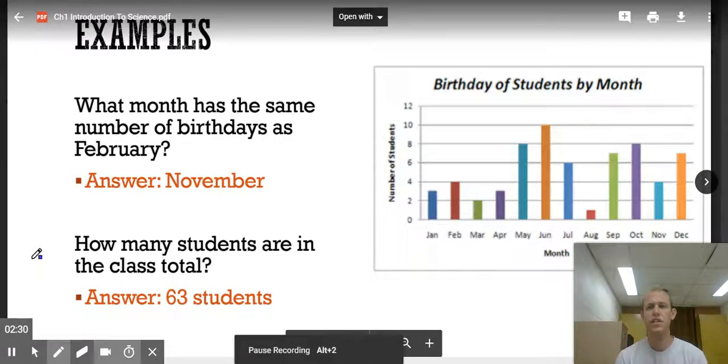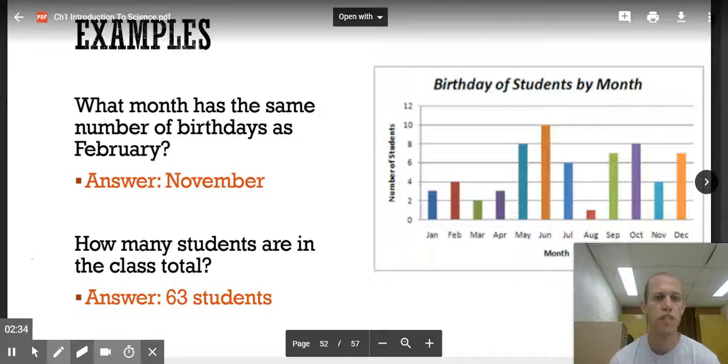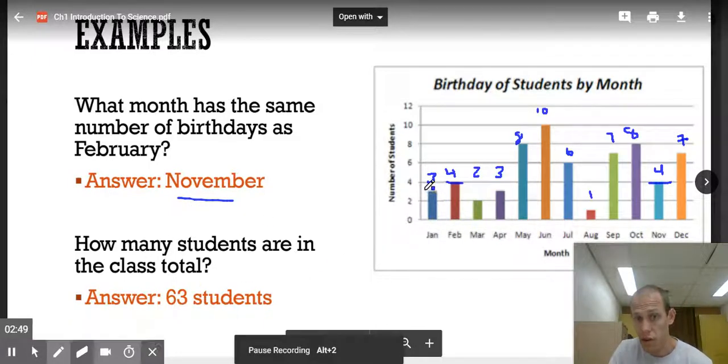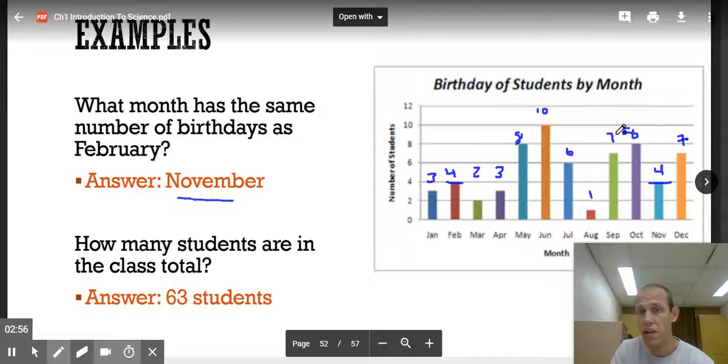All right, here we have a bar graph of birthdays of students by month. So what month has the same number of birthdays as February? February looks to have four right here. Go across, it looks like November also has four. How many students are in the class total? So we have a bar graph, and those bar graphs go up to certain heights, which represent the number of students. So if we just look at all those heights and look at what values they are and add all those together, we'll get the total, which is 63 students.